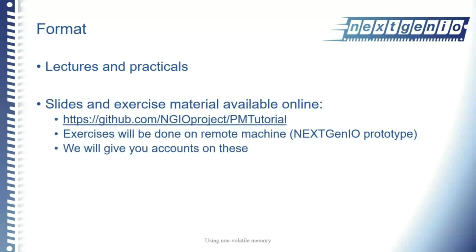There'll be lectures and practicals. As well as on the Archer website, we have a GitHub page for most of this material. We're doing exercises on a remote machine we have in Edinburgh called the NextGenIO prototype, because it was built in a European project called NextGenIO. That system has 34 nodes, and each node has three terabytes of Intel persistent memory — Intel non-volatile memory — and we'll have a look at how we can use that over today and next week.